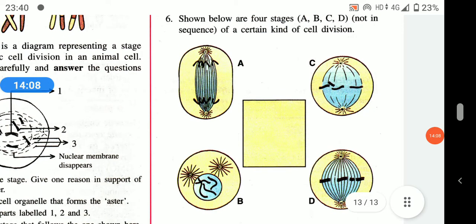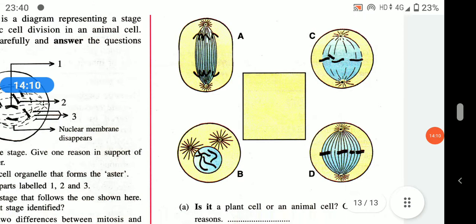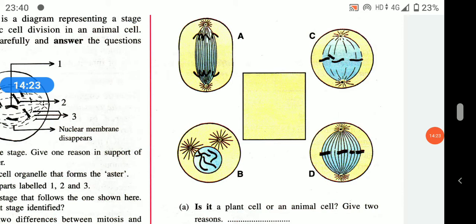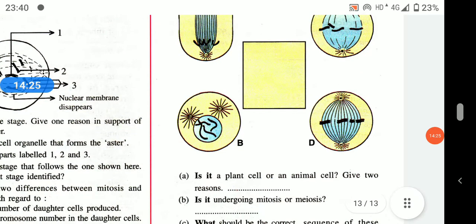Four stages A, B, C, D of a certain cell division are shown not in sequence — arrange them in correct order. First we have B (centriole divides), then C, then D, then A. It is an animal cell — reasons: presence of centriole and aster rays, and the cell is spherical in shape.